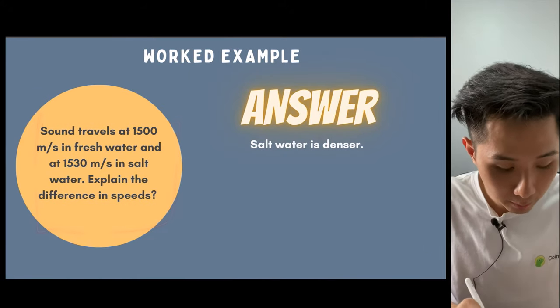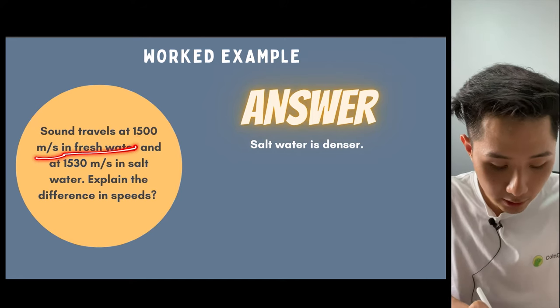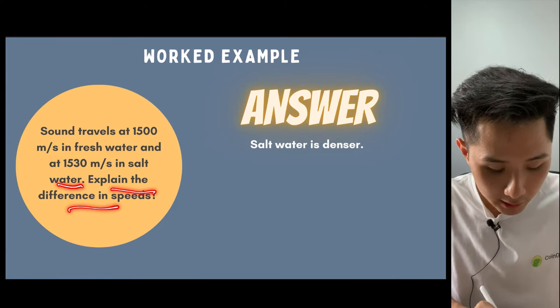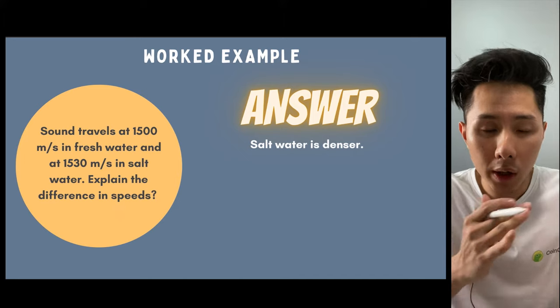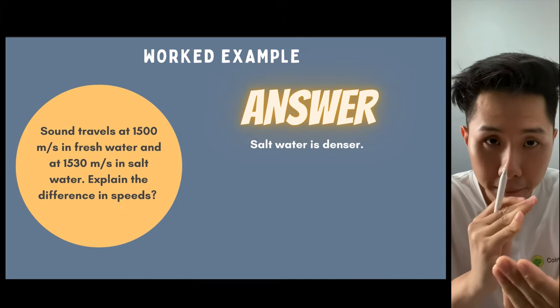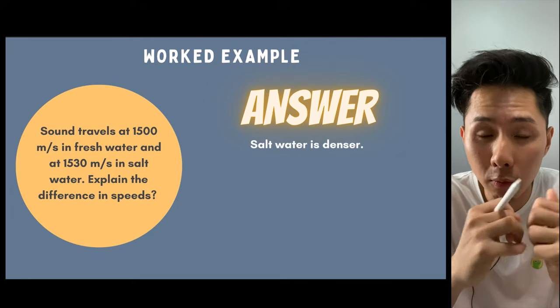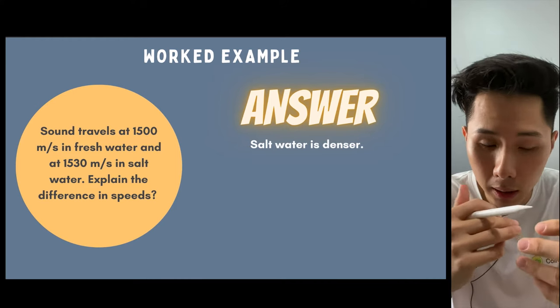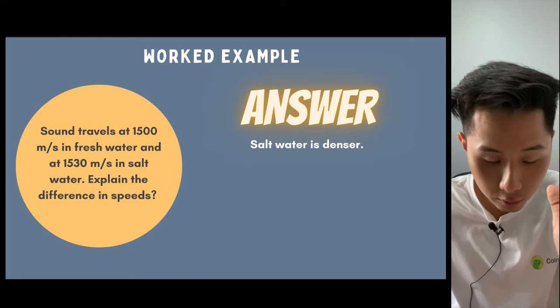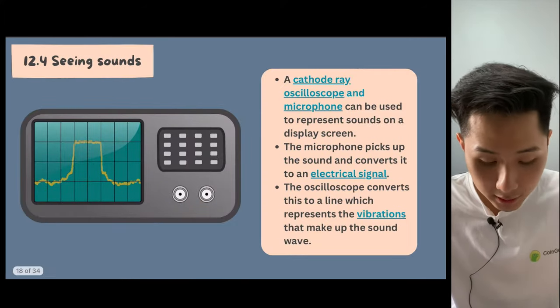There's another example. Sound travels at 1500 meters per second in fresh water, but it travels a little quicker, 30 meters per second quicker, in salt water. Explain the difference in speed. We know that sound travels through the vibration of particles. When you add salt into water, it will make the particles denser. As a result, vibration can pass on quicker and more easily. Therefore, the reason why sound travels faster in salt water is because it is a lot denser.